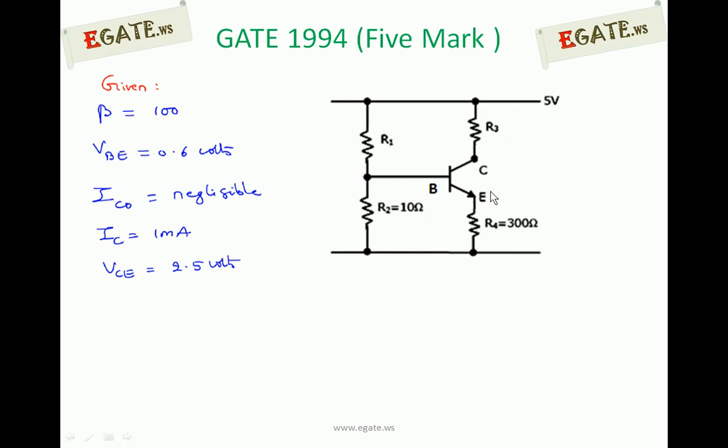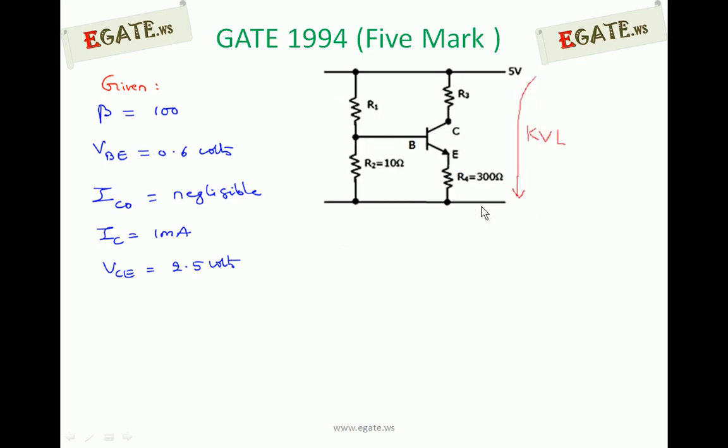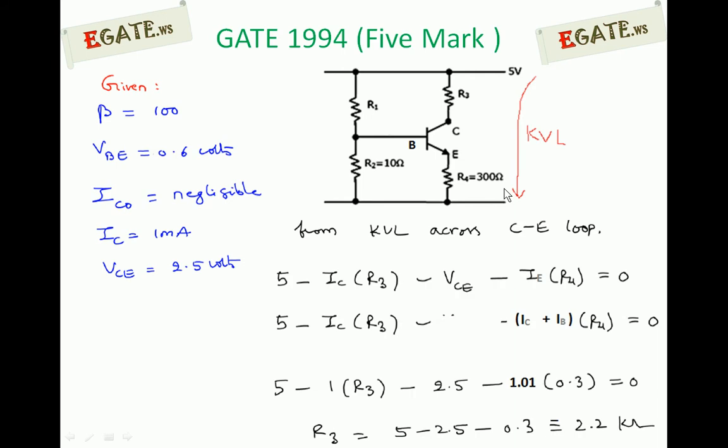Apply KVL across collector-emitter loop to calculate R3 value. We are applying KVL across 5 volts towards ground. This is going to be forming a loop. Write the KVL.